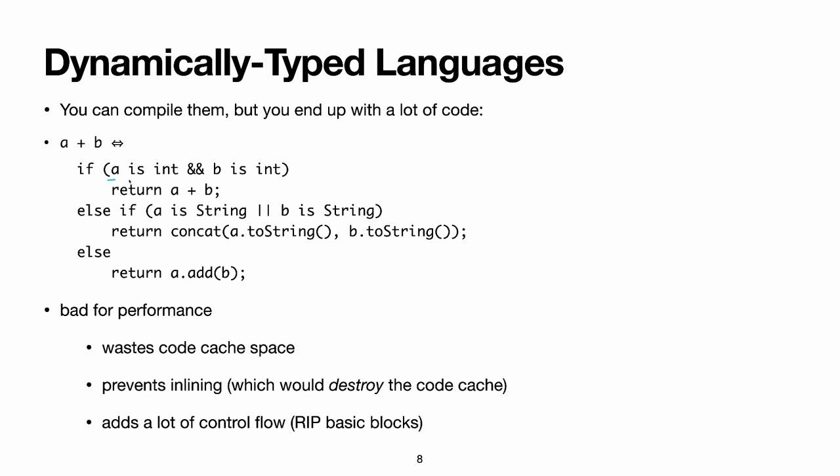In this example, if both operands are just integers, you just add them, and if at least one of the operands is string, then you ensure that both are strings, and you concatenate them. Otherwise, as a fallback, you try to call the add method on the A object, and presumably, if this method does not exist, the language will spit out an error at runtime. And it's like this for every single operation in your language. For instance, if you want to index an array in Ruby, it's not enough to just check that the index is an integer, you must also check if it can't implicitly be converted to an integer by calling a user-defined method, sort of like the add method here.